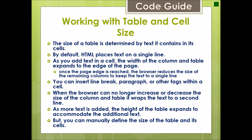Working with table and cell size: the size of a table is determined by the text it contains. The more data in a cell, the larger its size will be. By default, HTML places text on a single line; as you add text, the width of a column expands to the edge of the page. You can insert line breaks, paragraphs, or images within a cell. As more text is added, the height also expands, but you can manually adjust the table size.